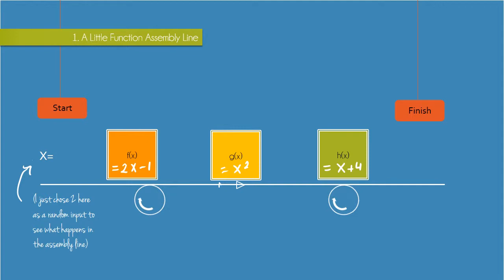And let's send through a 2 and see what our final output is. So first the 2 gets sent to f of x where we have 2 by 2 minus 1 which is just 4 minus 1 or 3.